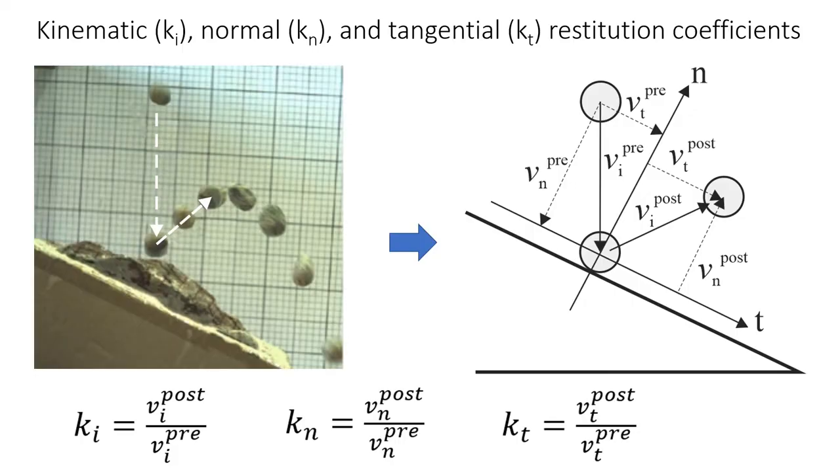In this test we estimate the coefficient of restitution. We use a high-speed camera set in front of the rock surface, and then we have a rock that we drop down. It hits the rock surface and then it bounces. What we need to do with the high-speed camera is measure the velocity.